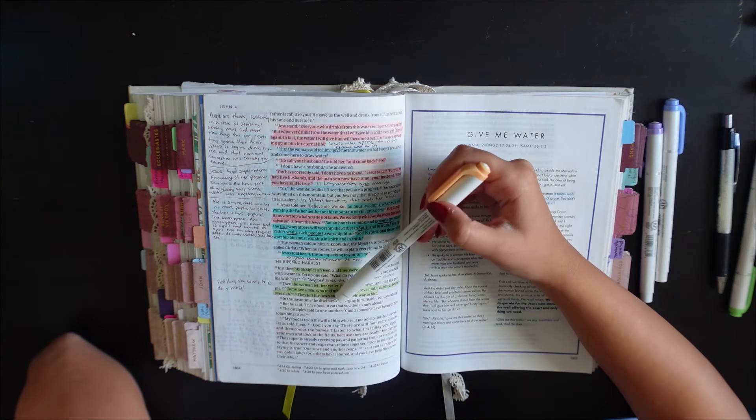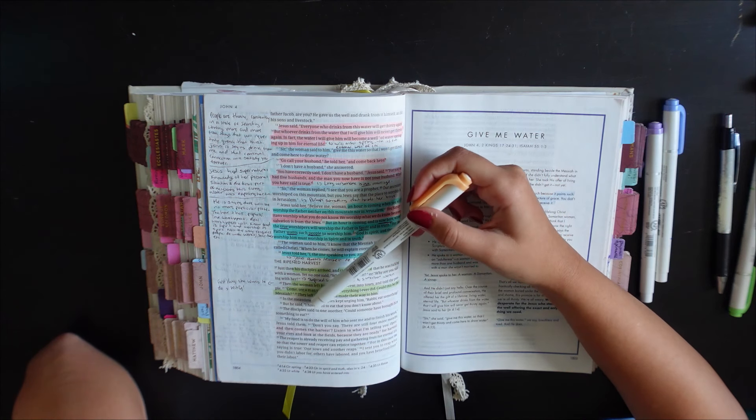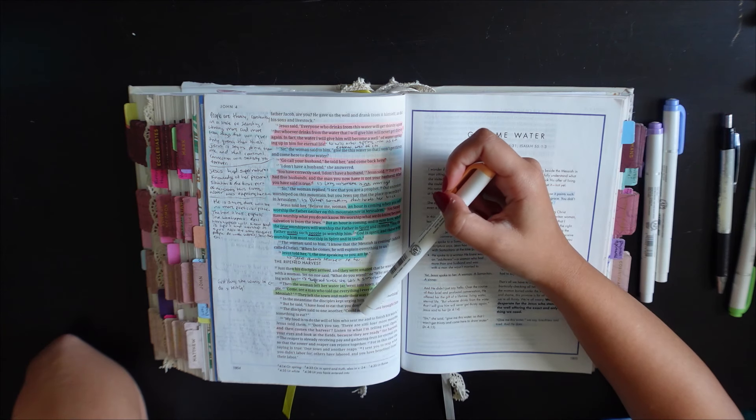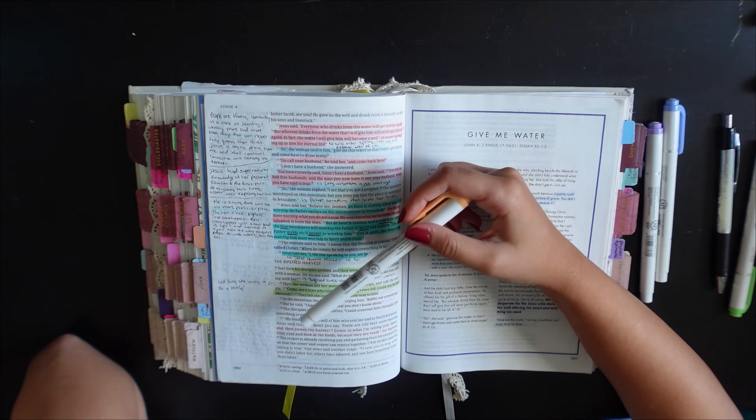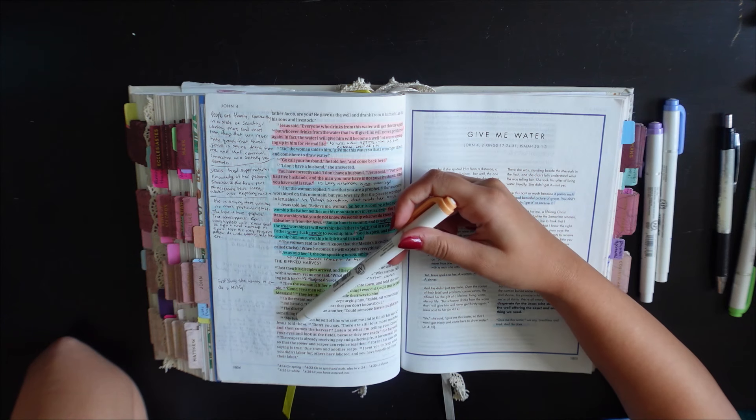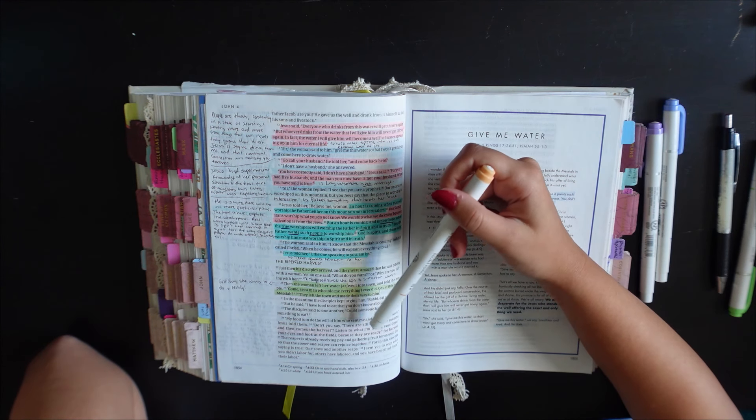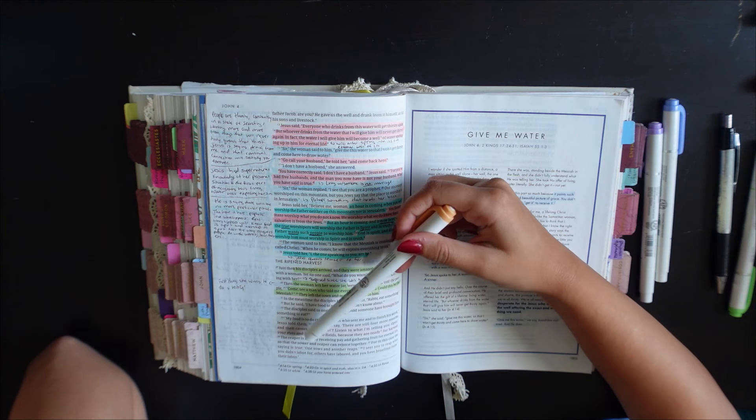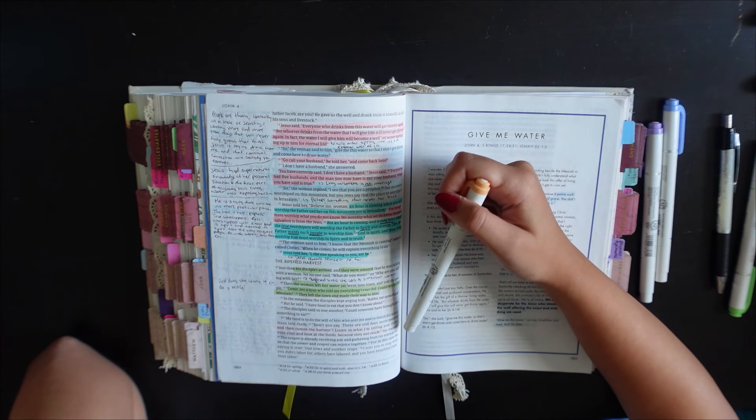In the meantime the disciples kept urging him rabbi eat something but he said I have food to eat that you don't know about. The disciples said to one another could someone have brought him something to eat? My food is to do the will of him who sent me and to finish his work Jesus told them. Don't you say there are still four more months and then comes the harvest? Listen to what I'm telling you. Open your eyes and look at the fields because they are ready for harvest.